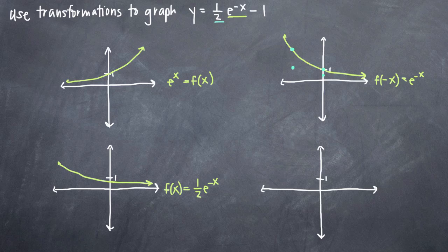And then our final step would be to apply this negative one here. We know from studying transformations that adding a negative one like that is just going to shift our graph down one unit.